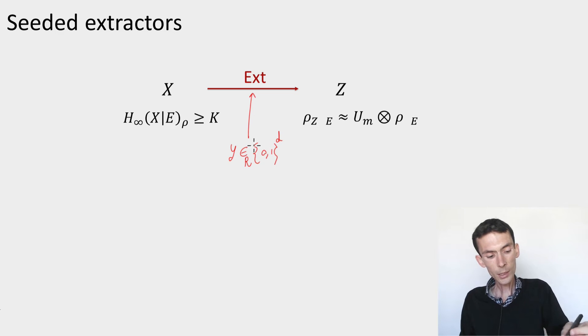And then the extractor takes as input X, which is partially random, conditioned on the side information, Y, which is uniformly random, independent from the side information, and produces Z, which now is defined as Ext(X,Y).